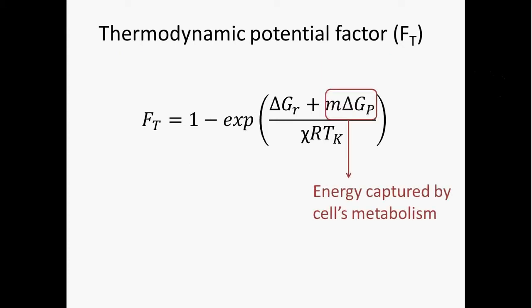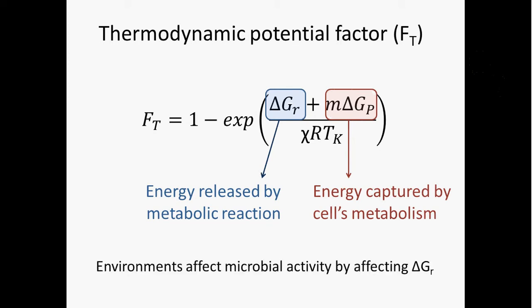Alright, so let's look into this a little bit further. Collectively, these two terms basically represent the amount of energy captured by a cell's metabolism - it's the number of ATPs generated times the amount of energy necessary to do that. And then this other term is the amount of energy released by a metabolic reaction, which you should be familiar with - delta G of the reaction. Basically, environments affect microbial activity by affecting this term right here. This is the thing that can change as a result of changes in chemistry in the environment. With the exception of temperature, all these other things are either constants or simply a function of the cell itself. So it's mostly through this delta G of the reaction that the environment influences the rate of microbial reaction.